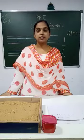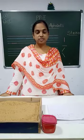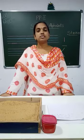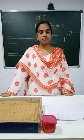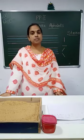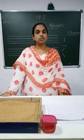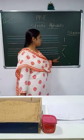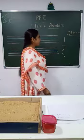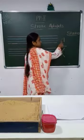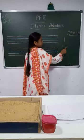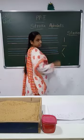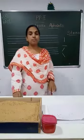Praise Lord! Good morning, kids. Today we are going to do the stroke alphabet. So we have learnt in previous class about strokes and stroke alphabets. These are the strokes we have learnt: standing line, sleeping line, left slanting line, and right slanting line.